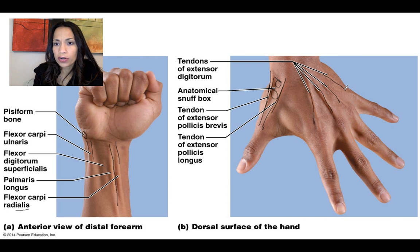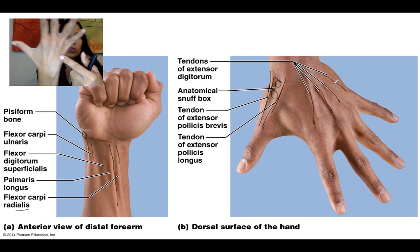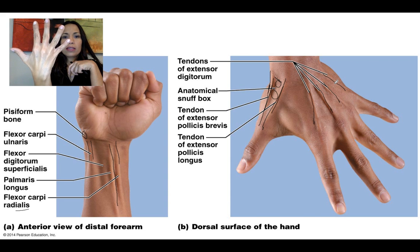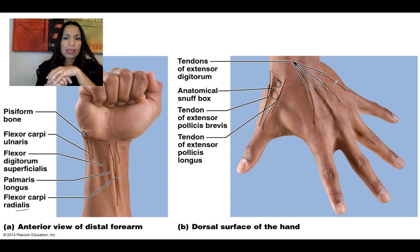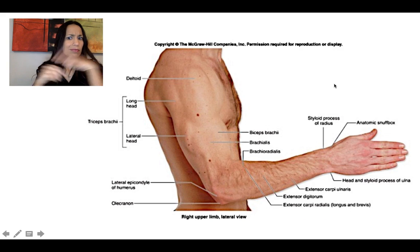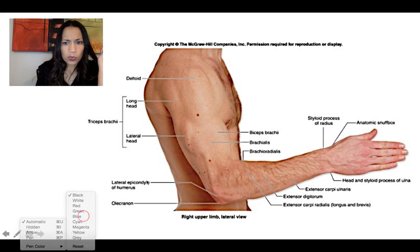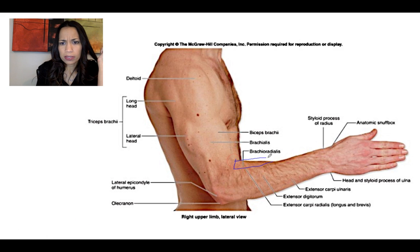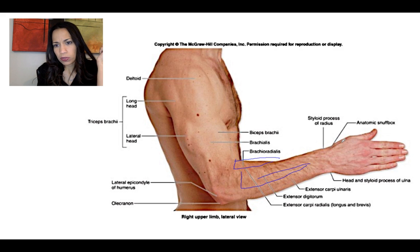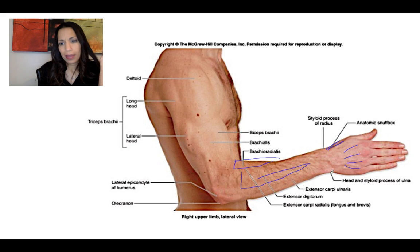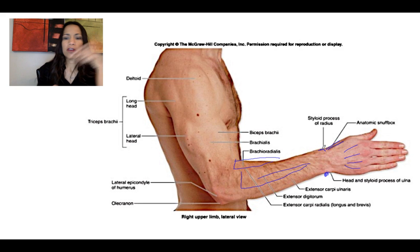When you extend your fingers, you'll be able to see the tendons of the extensor digitorum muscle. In this image, we can see the brachioradialis, the extensor muscle compartments, the anatomical snuff box, the tendons of the extensor digitorum, the head of the ulna, and the styloid process of the radius.